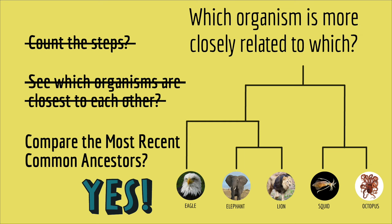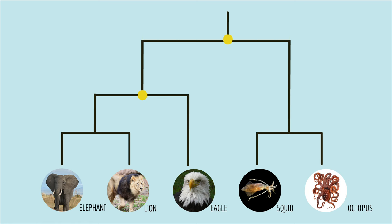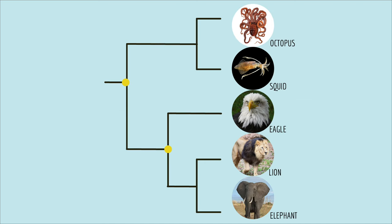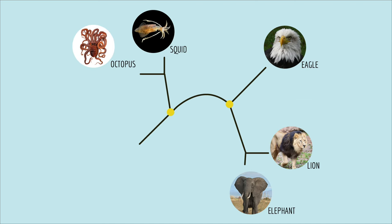So, yes, when you want to know which organism is more closely related to which, compare the most recent common ancestors. It turns out, this logic works no matter what the tree looks like. I can rearrange the tree this way, or this way, or this way. And always, the most recent common ancestor between eagles and elephants is more recent than the most recent common ancestor between eagles and squid.